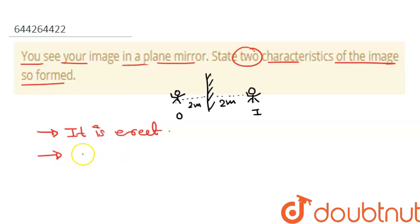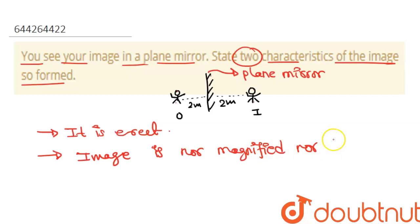Second, the image is of the same size. It is not magnified or diminished. For a plane mirror, the image is not magnified—it is basically of the same size.